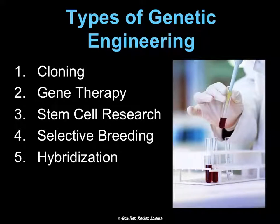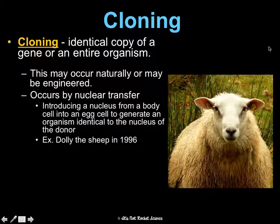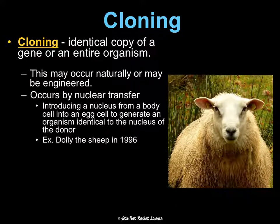We're going to talk through five types of genetic engineering and the benefits and drawbacks. First, cloning, which is making an identical copy of a gene or even an entire organism like Dolly. This may occur naturally or it could be engineered, and it usually occurs by nuclear transfer — where we introduce a nucleus from a body cell into an egg cell to generate an organism identical to the nucleus of the donor.